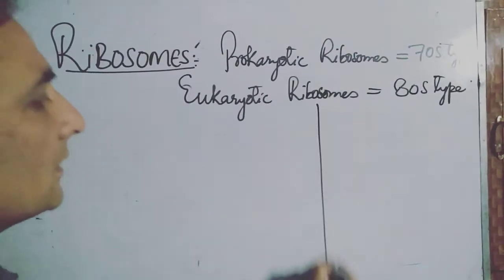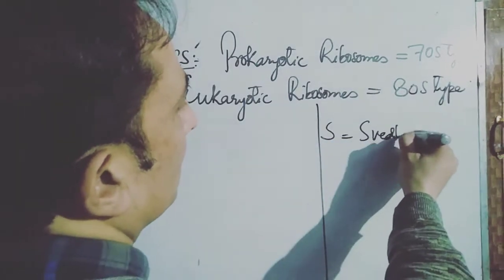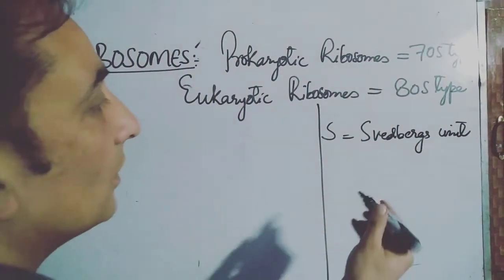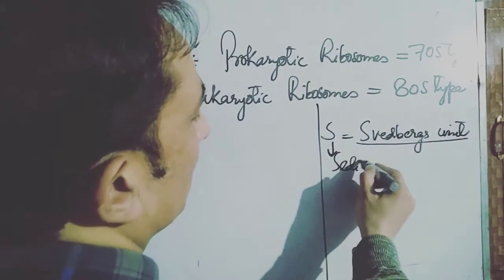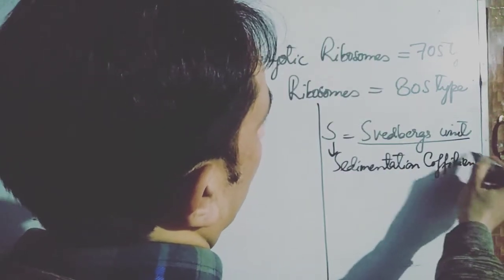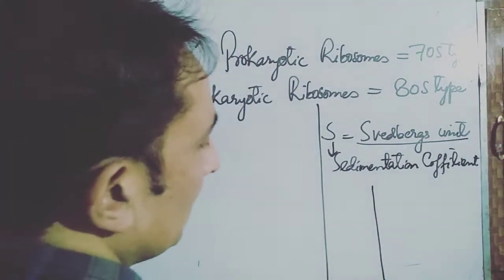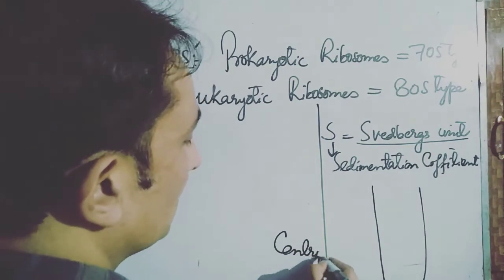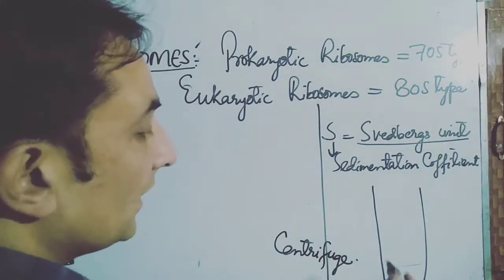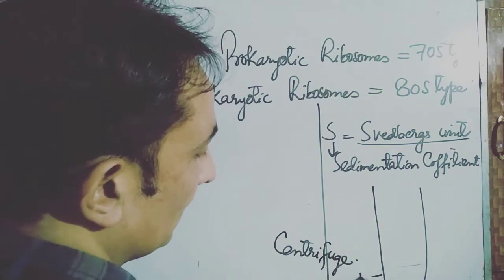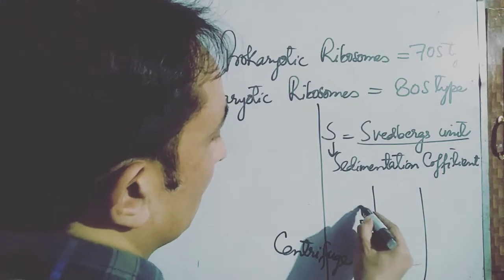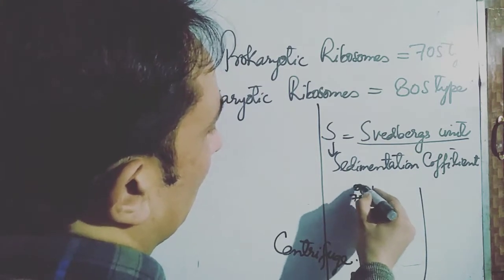What is 'S'? S stands for Svedberg's unit, named after the scientist Svedberg who discovered the ultracentrifuge. S can also mean sedimentation coefficient. To understand this, we place a molecule in a centrifuge. The centrifuge has markings: 0, 10, 20, 30S, 40S, 50S, 60S, 70S, 80S, 90S, and so on.